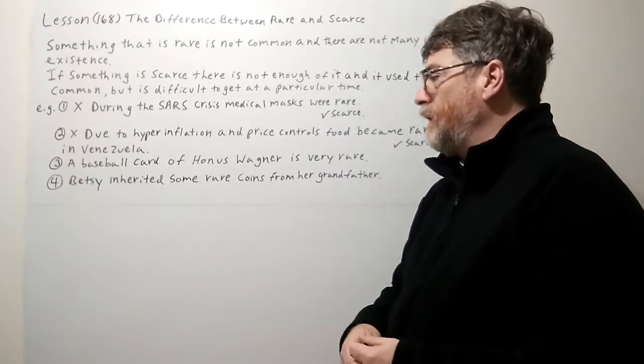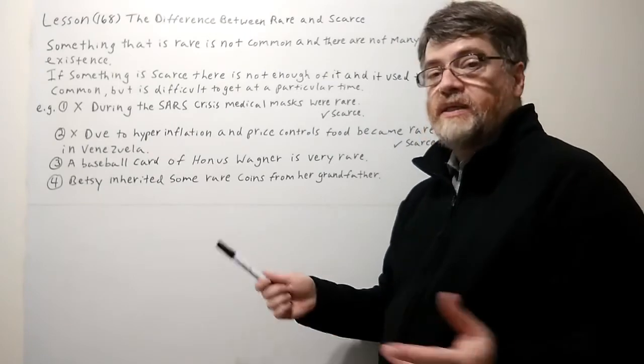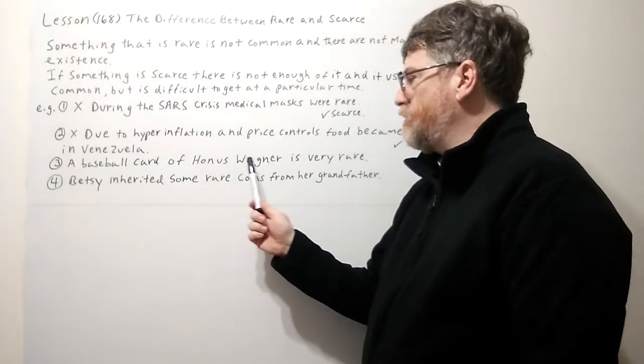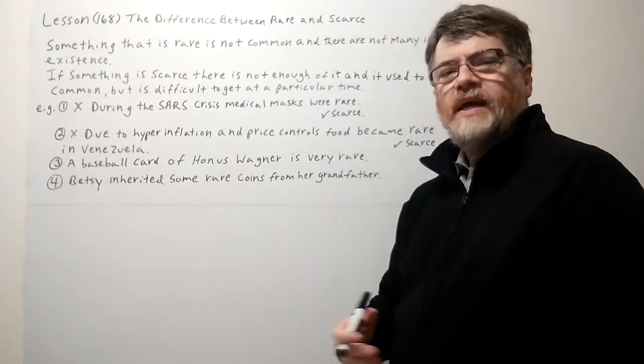And let's look at three and four. Three and four here are just typical examples of rare. A baseball card of Honus Wagner is very rare.